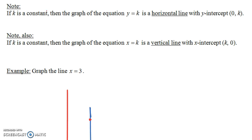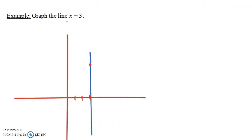If k is a constant, then the graph of y equals k is a horizontal line with y-intercept (0, k). And the graph of x equals k is a vertical line with x-intercept (k, 0). For example, graph the line x equals 3. Any point on this line has an x-coordinate of 3 — this line is precisely the set of points with x-coordinate 3. Notice the slope here is undefined: vertical lines have undefined slope, so we can't put x equals 3 in the form y equals mx plus b because m would not be defined.